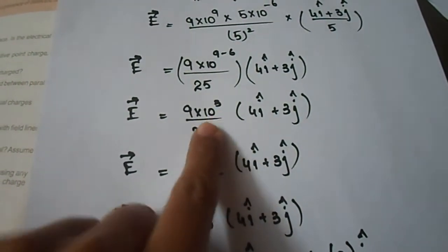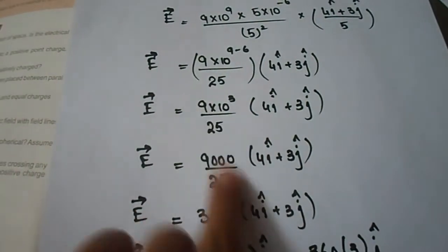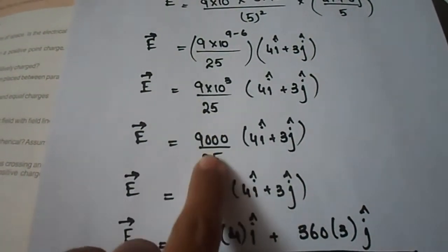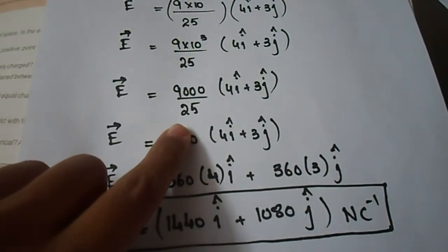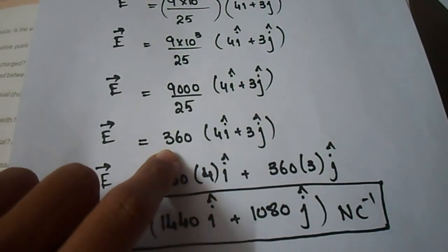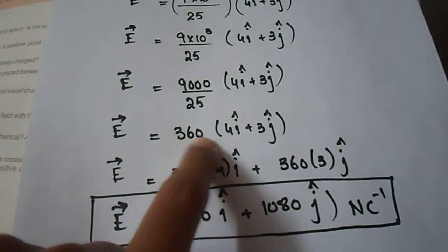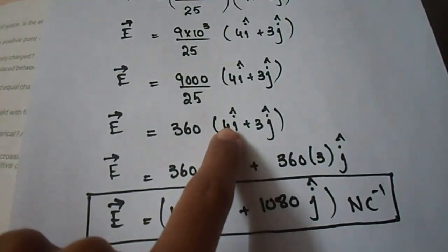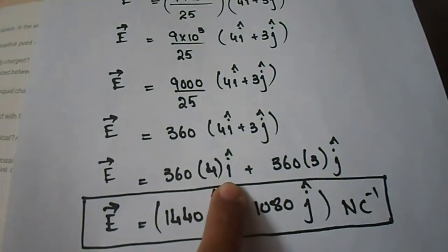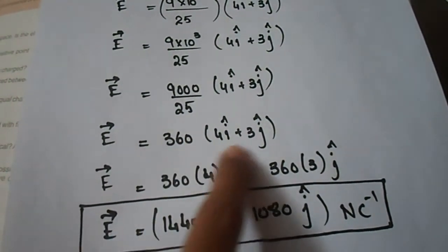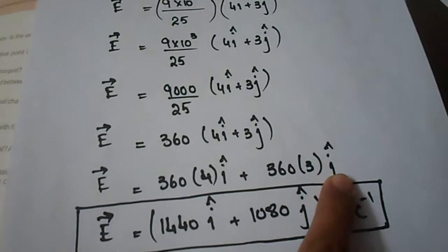10 power 3 means 1000, so 1000 times 9 equals 9000 in the numerator, and denominator is 25. 9000 divided by 25 simplifies to 360. So we have 360 times (4i hat plus 3j hat).